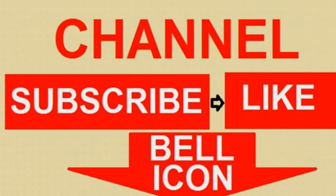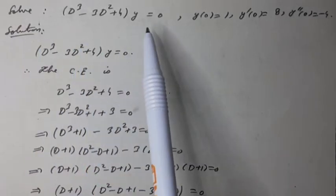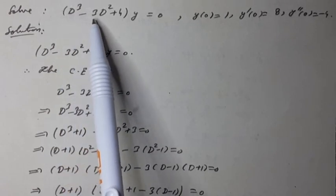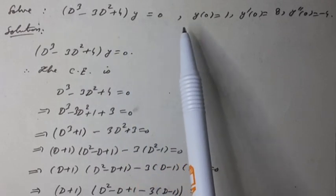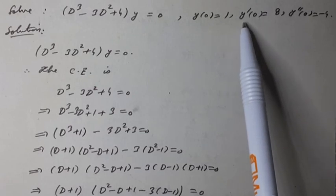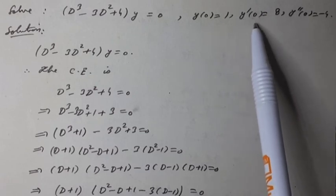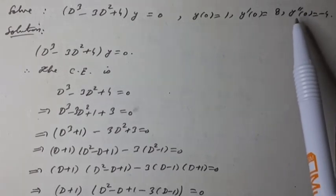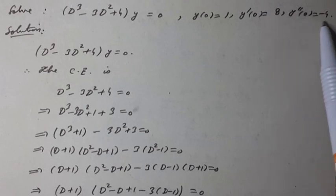Share the videos. Solve the homogeneous differential equation: d³y/dx³ minus 3d²y/dx² plus 4y equals 0, with initial conditions y(0) = 1, y'(0) = 8, and y''(0) = -4, where y' denotes the first derivative and y'' denotes the second derivative.